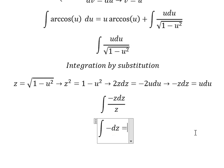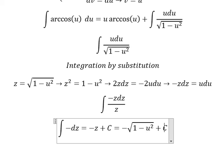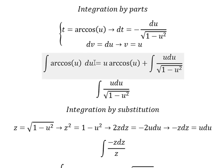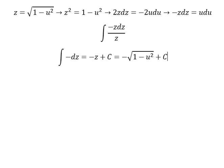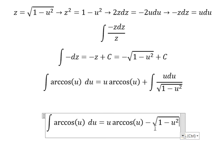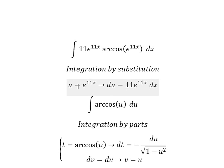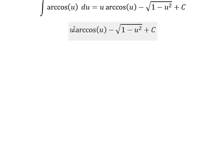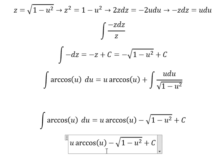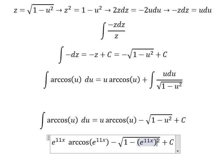The integration of this gives negative z, plus constant c. Substituting z back, and then substituting u back, we get the final answer. This is the end — thank you for watching.